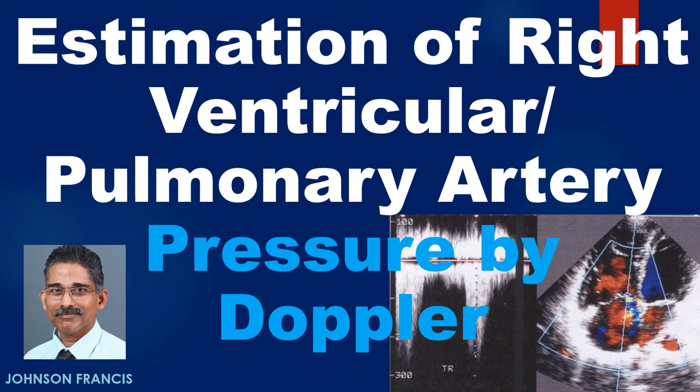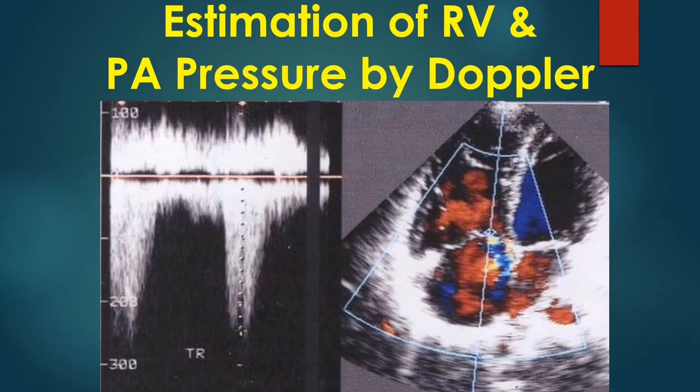Estimation of right ventricular systolic pressure by Doppler echocardiography is done from the apical four-chamber view. The colour Doppler image shows the bluish mosaic tricuspid regurgitation jet behind the closed tricuspid valve, along the interatrial septum into the right atrium.